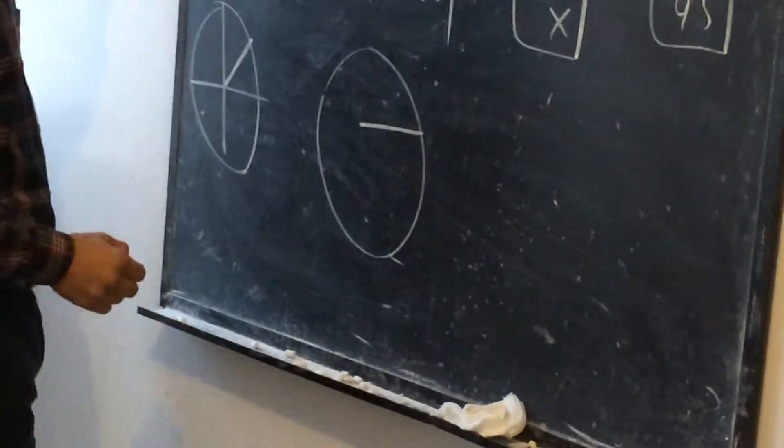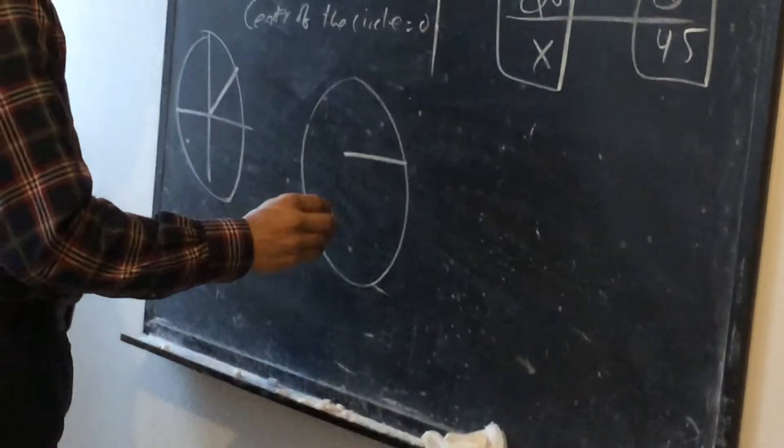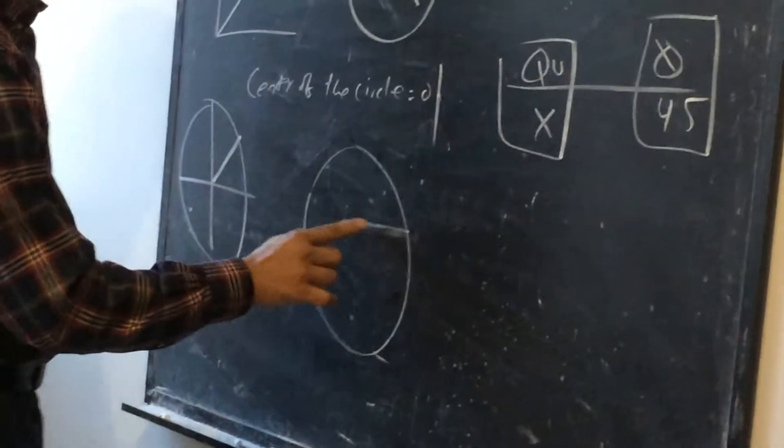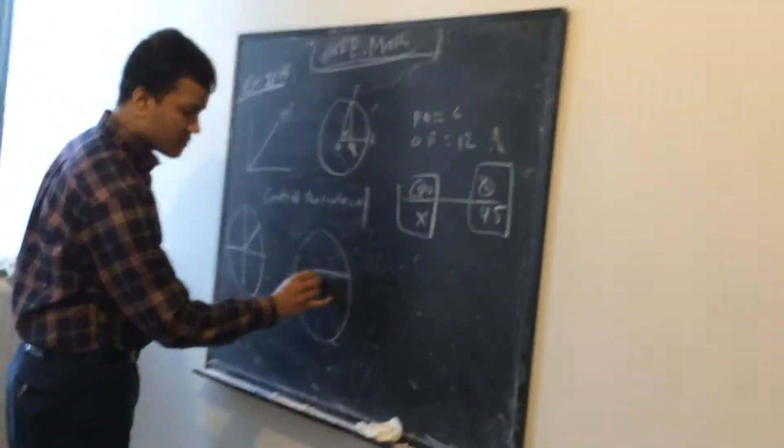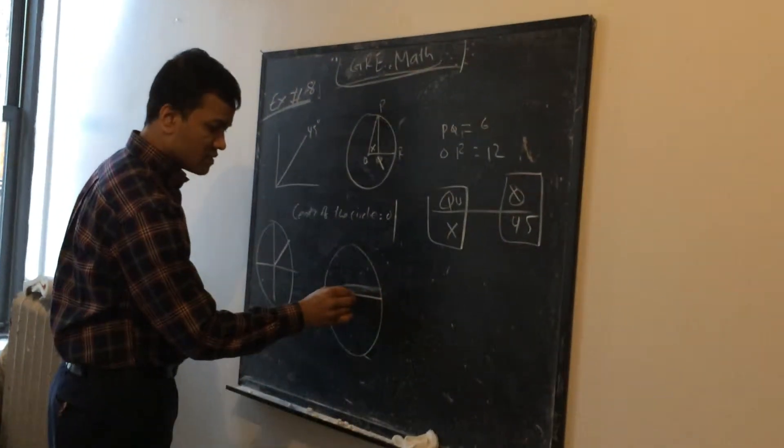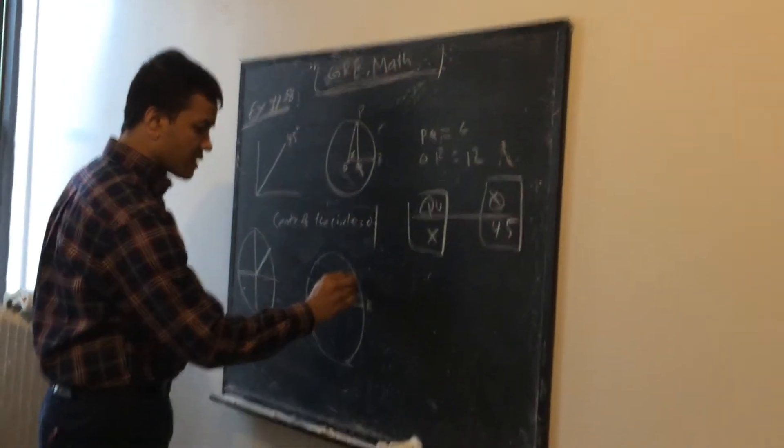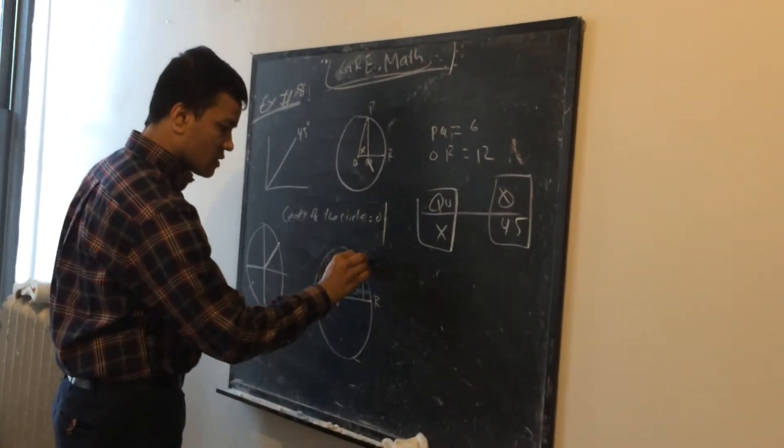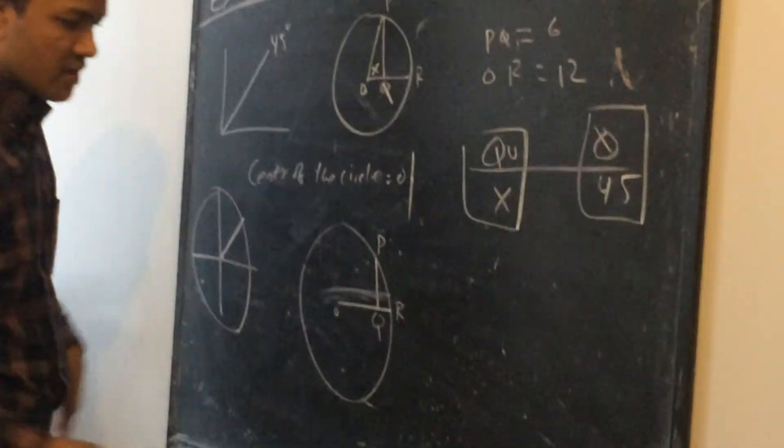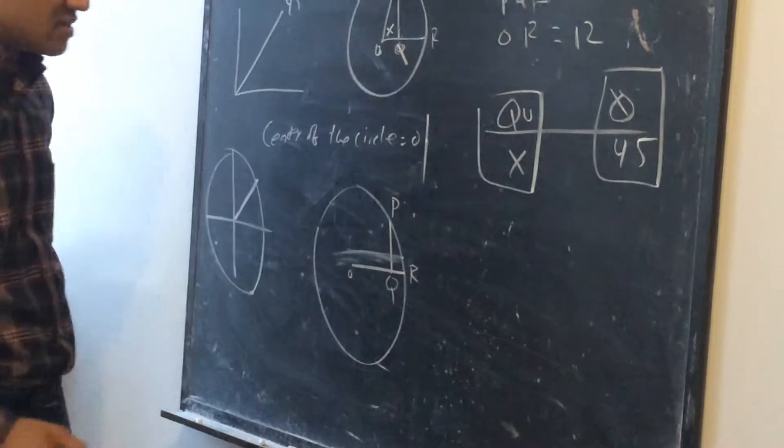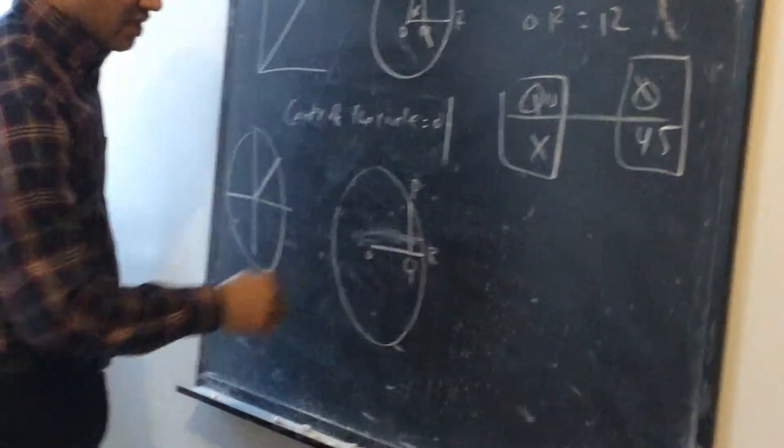So this is OR, this is PQ, this is O, center. So this is OR, this is PQ. Hopefully now OR is twice as big as PQ, that is established.